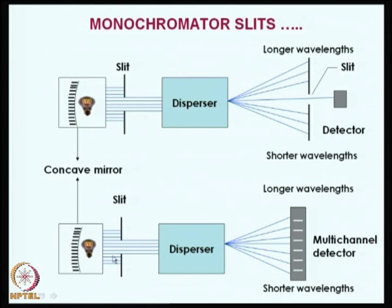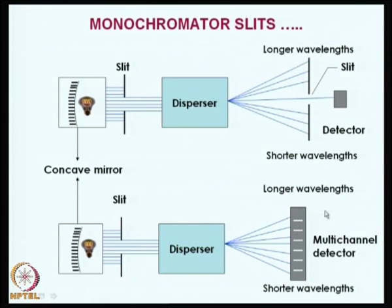We can place a detector at the end of the exit slit and collect the radiation coming through the second slit. In the bottom configuration, we can have a multichannel detector which can collect all the wavelengths coming out from the disperser. For example, if you have a prism, you will remember that seven colors come out of white light, and the same thing is true with diffraction units. If I place a multichannel detector at the end of the slit, I can collect all the information related to the incident radiation.